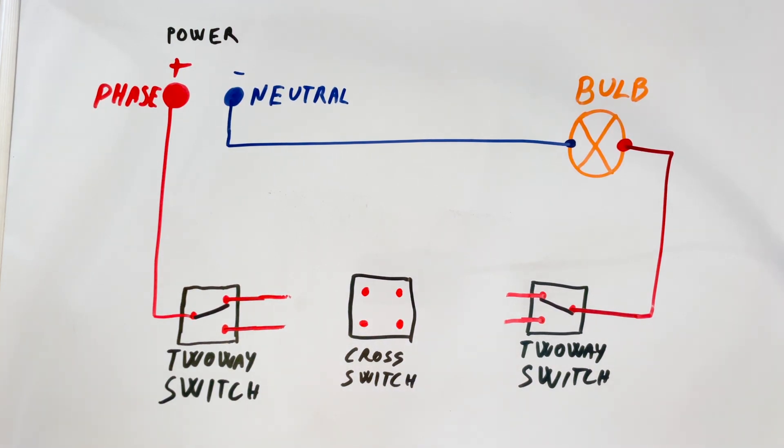To add the cross switch, we place it between the two two-way switches and connect it to the traveler wires. Instead of linking the two-way switches directly, we connect the two traveler wires from the first switch to the input terminals of the cross switch.